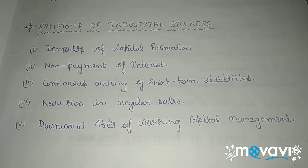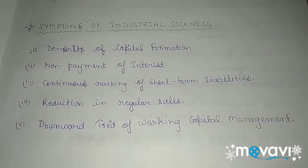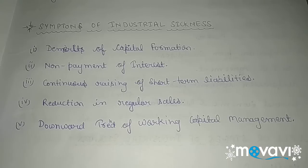Next is non-payment of interest — if the industrial unit has taken long-term loans and is not able to pay interest on those loans, and keeps defaulting on those payments repeatedly, then looking at this situation we can say that the industrial unit may fall in the sick industrial unit category. Next is continuous raising of short-term liabilities — taking long-term liabilities is understandable, but if an industrial unit keeps using short-term liabilities repeatedly, we can identify sickness from this situation.